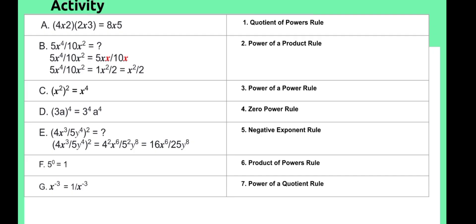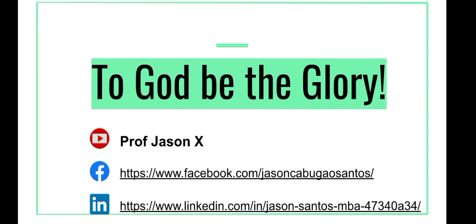So that's about it. I'm going to give you an activity which you will have to answer in your Google Classroom. On the first column we have examples, and on the second column we have the different exponent rules. What you have to do is match them — for example, A is 1, B is 5, C is 3, and so on. Thank you so much, I hope you learned something from this video, and I will see you on the next one.